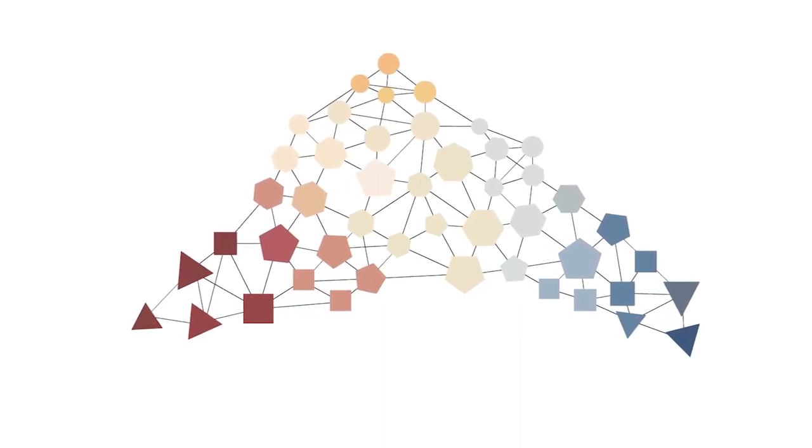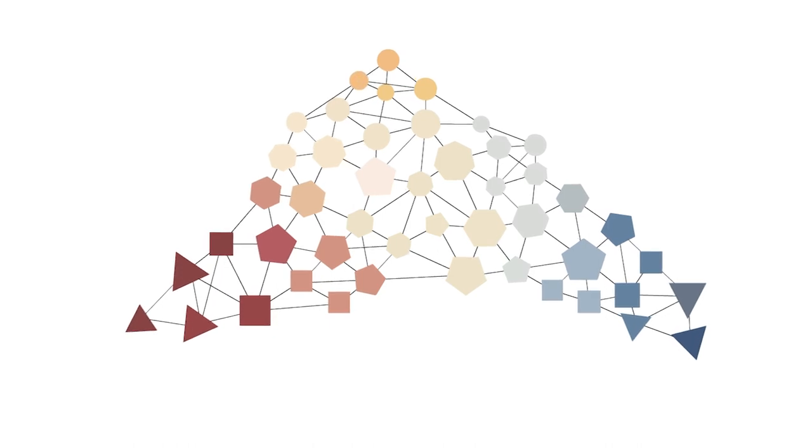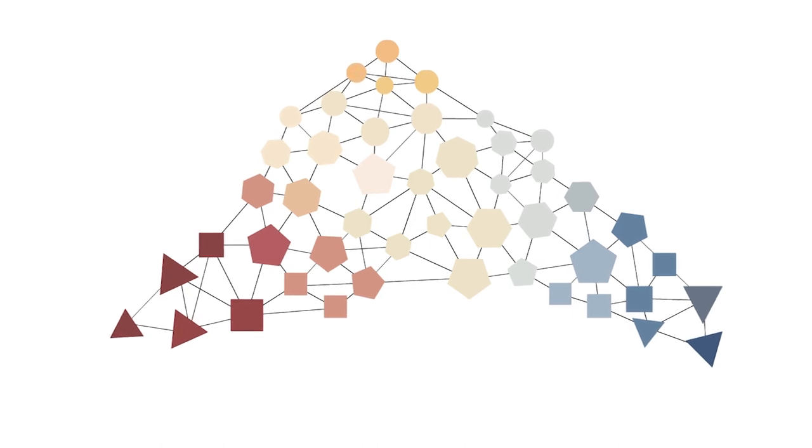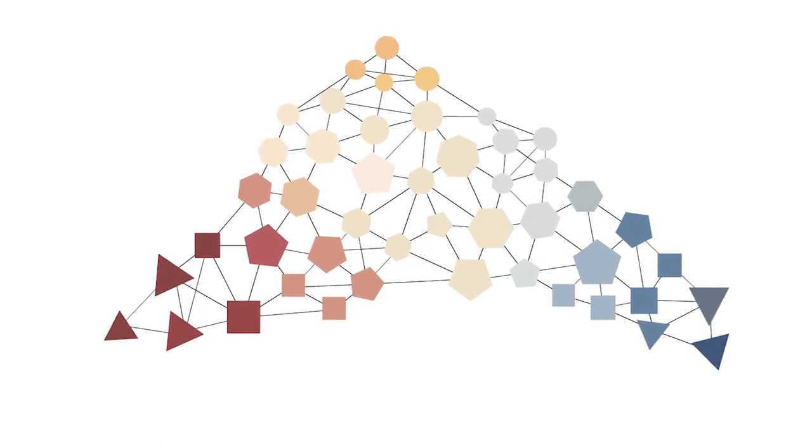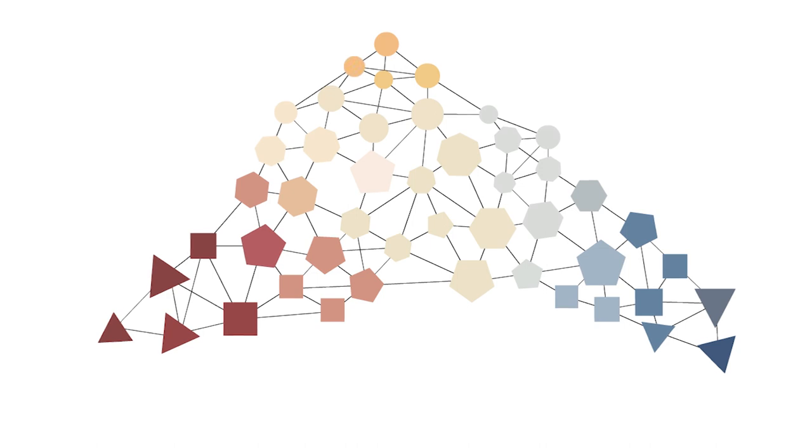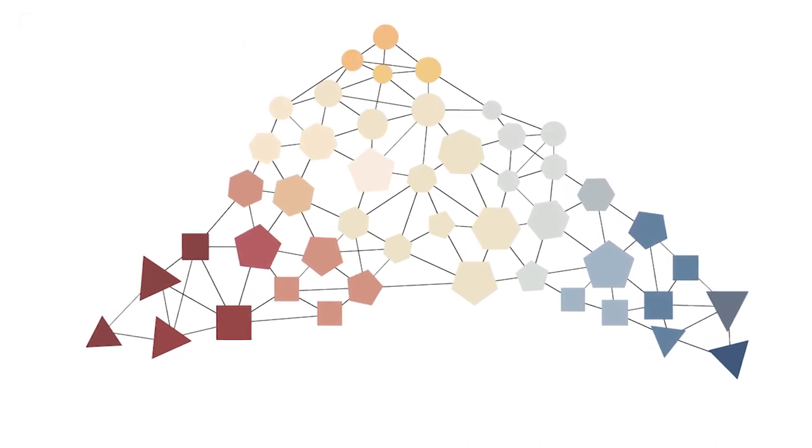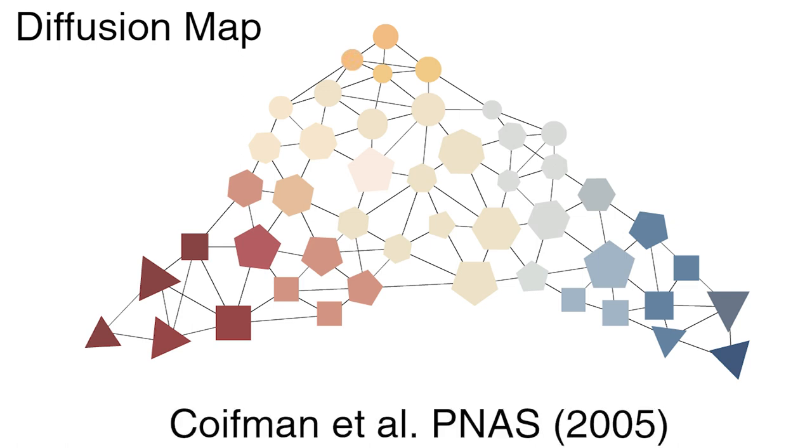One way to do this would be to measure the shortest path distance between the two network nodes. An even better way, which leads to less noisy results, is to use the so-called diffusion distance between the nodes, which takes all possible paths into account. This idea, the so-called diffusion map, was first proposed in a paper by Coifman and co-workers.